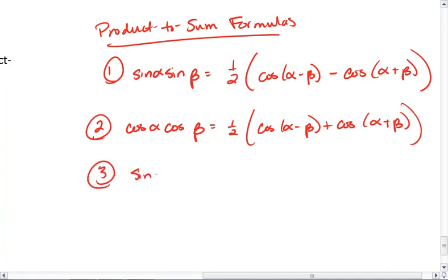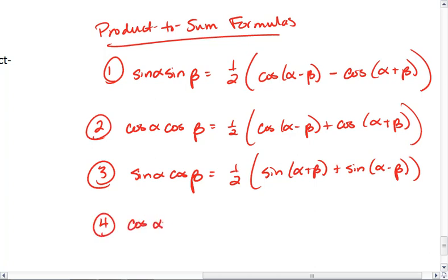Maybe I have sine of alpha times cosine of beta. This equals 1/2 sine alpha plus beta plus sine alpha minus beta. And lastly, I can have cosine alpha times sine of alpha plus beta minus sine alpha minus beta.